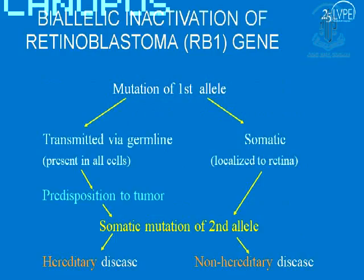This is the two-hit hypothesis for development of cancer, and it applies to many other genes as well. You have mutation of the first allele of the gene transmitted through the germline — meaning it's present in all cells of the body — giving the patient a predisposition to tumor. But you also need a mutation of the second copy, which happens somatically in the retina, giving rise to hereditary disease.